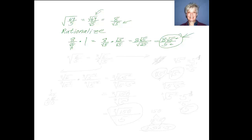Alright, let's move on. Now it's going to get trickier. I'm going to rationalize the cube root of 6 fifths. That means I'm going to have the cube root of 6 on top and the cube root of 5 on the bottom. Whoa, we're in a pickle now.